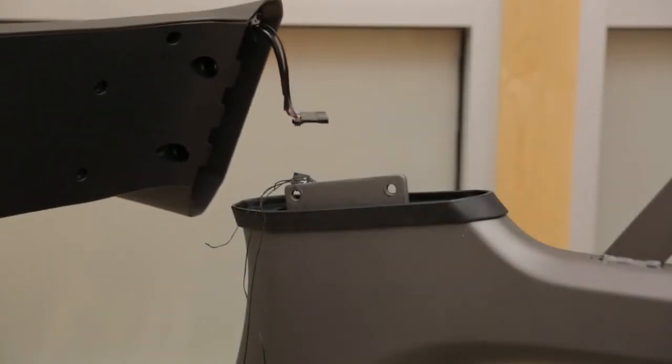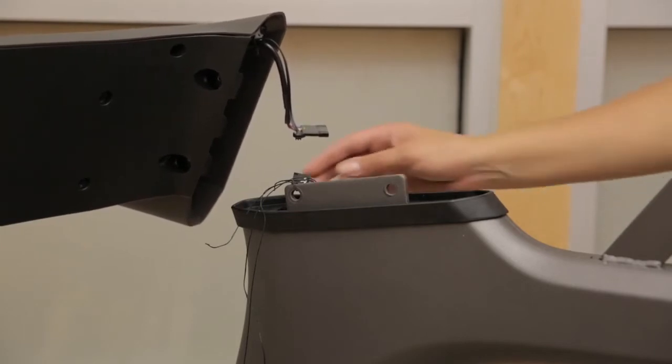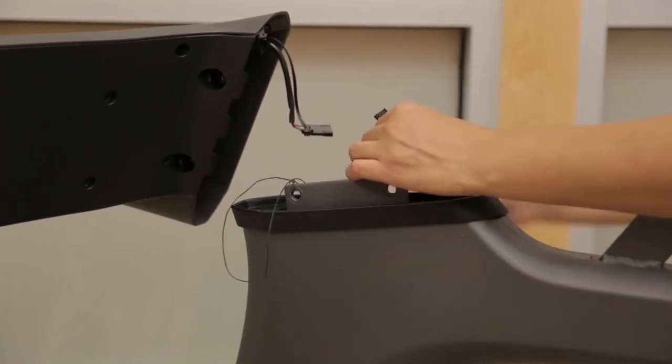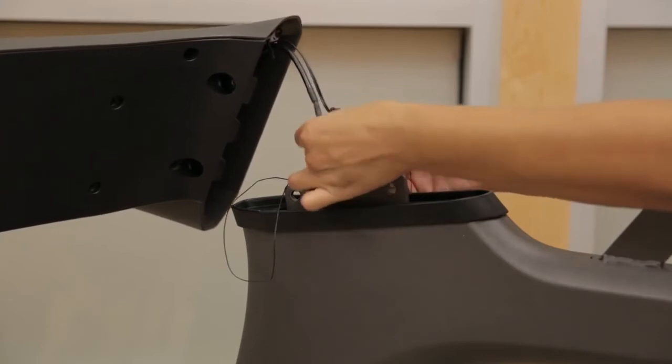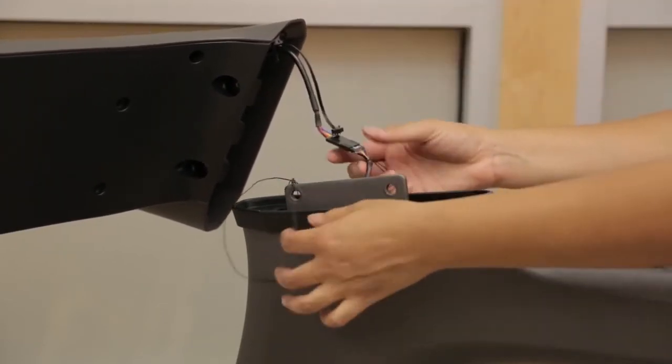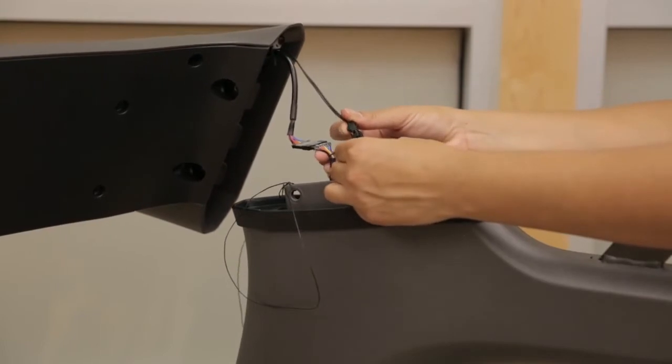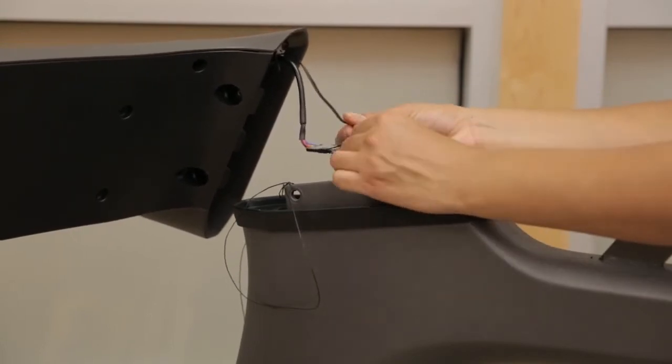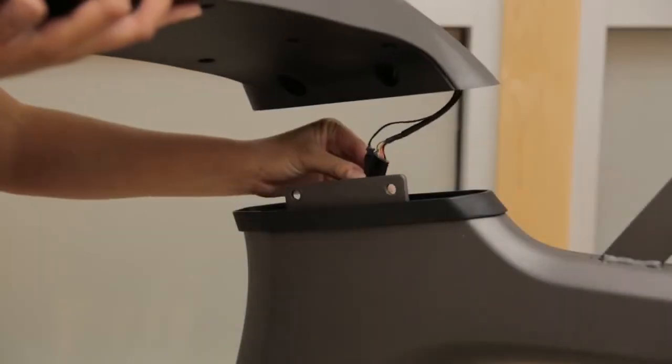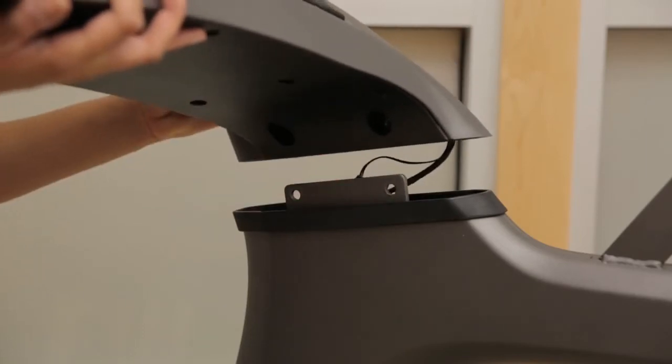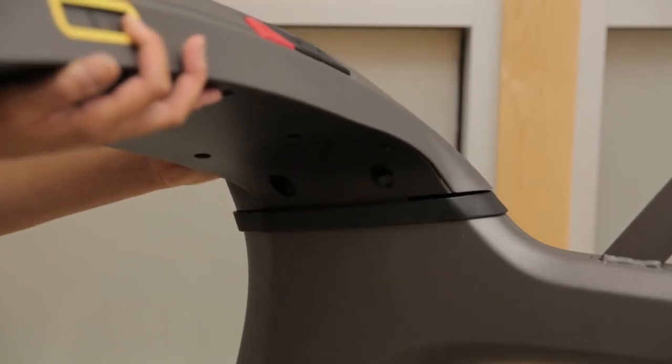Connect the cables from the mast to the cables from the console base. There should be a console cable on the right side and handlebar heart rate sensor wires on both sides. Once connected, discard the lead wire and tuck the wires into the masts.